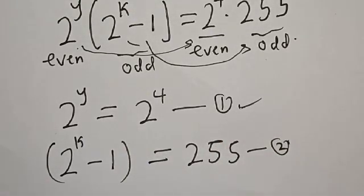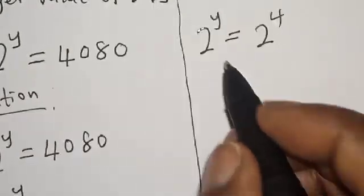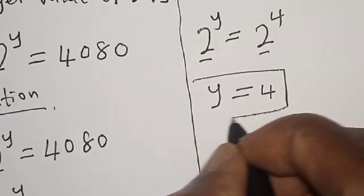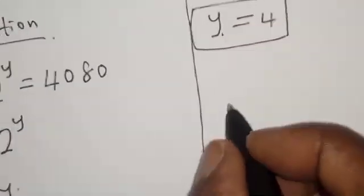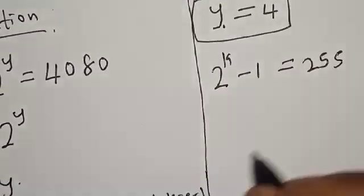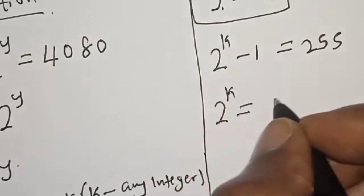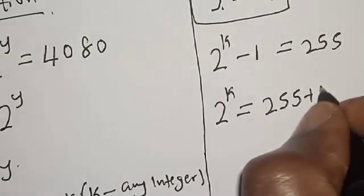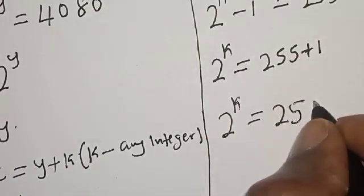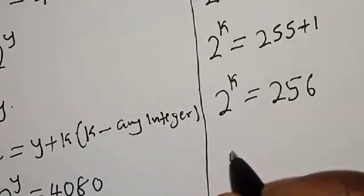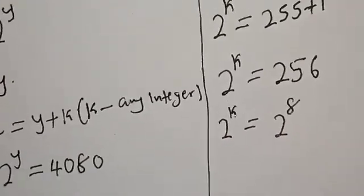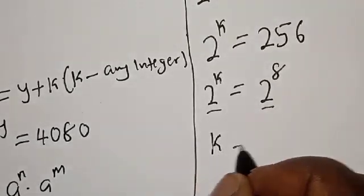From equation 1: 2 raised to power y equals 2 raised to power 4. Since they have the same base, y is equal to 4. From equation 2: 2 raised to power k minus 1 equals 255, so 2 raised to power k equals 256. Since 256 equals 2 raised to power 8, and they have the same base, k is equal to 8.